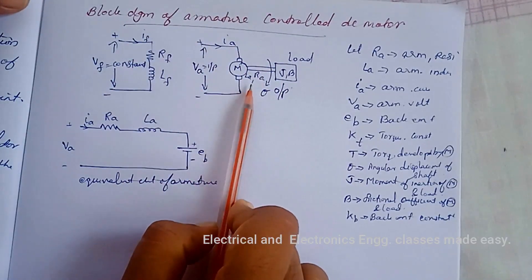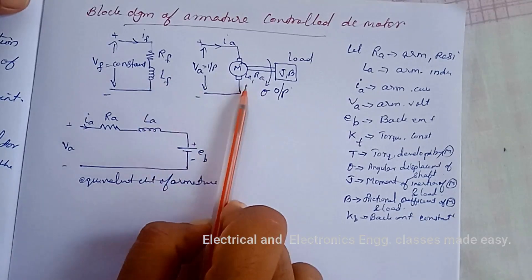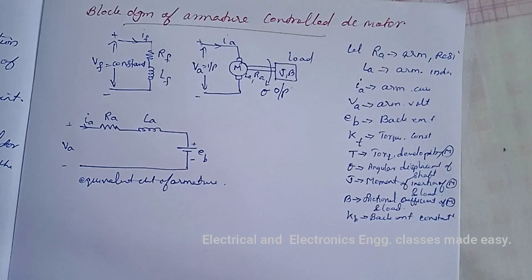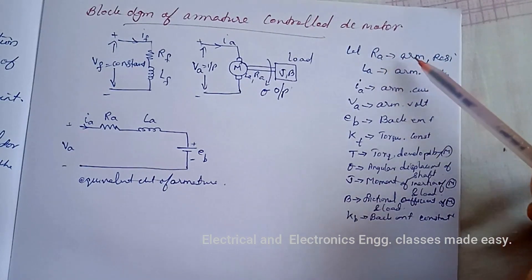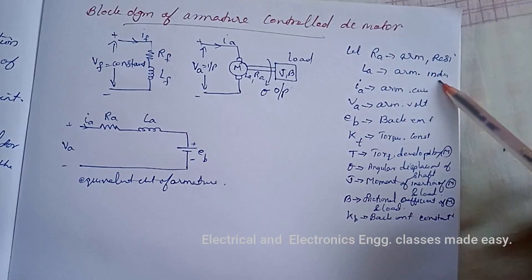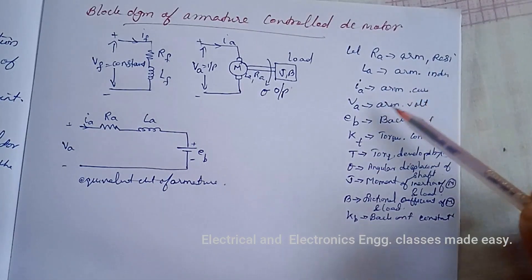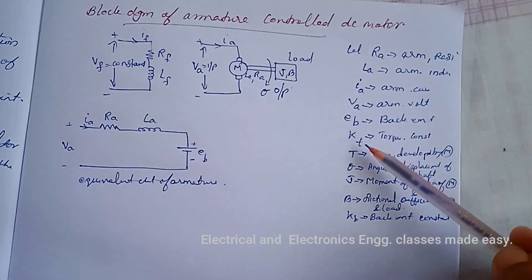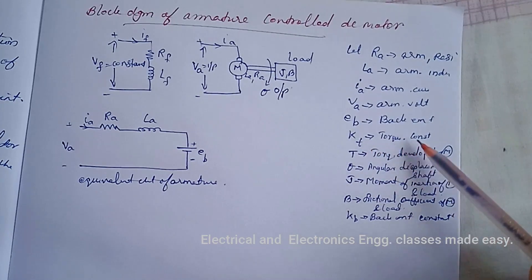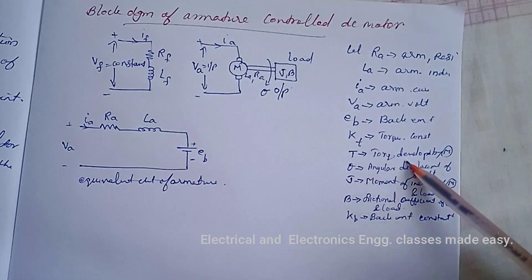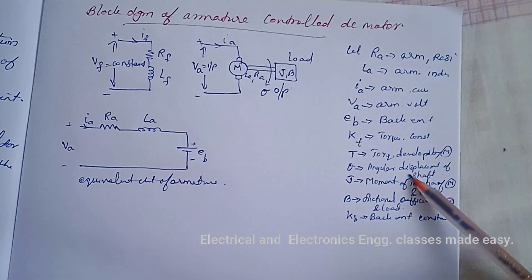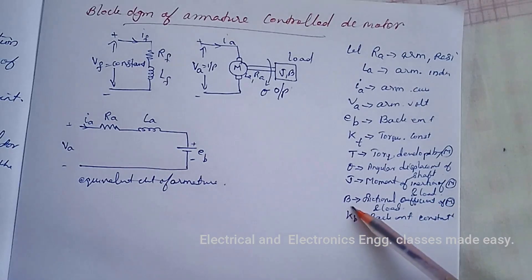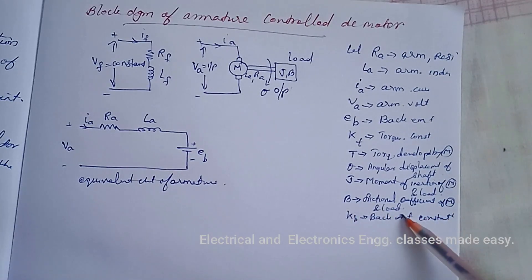This is the figure for the armature controlled DC motor speed control system. Let R_A be the armature resistance, L_A the armature inductance, I_A the armature current, V_A the armature voltage, E_B the back EMF, K_T the torque constant, T the torque developed by the motor, θ the angular displacement of the shaft, J the moment of inertia of the motor and load, B the frictional coefficient of the motor and load, and K_B the back EMF constant.